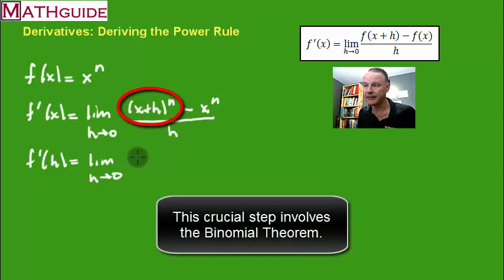I'm going to take this and expand it. So you would get x to the n plus you're going to get, let's see, how does this go? You're going to get n x to the n minus 1 h as our first term, or actually our second term. And we're going to keep going. So our next term would be n times n minus 1 times x to the n minus 2 times h squared. And of course, this would all be over 2.